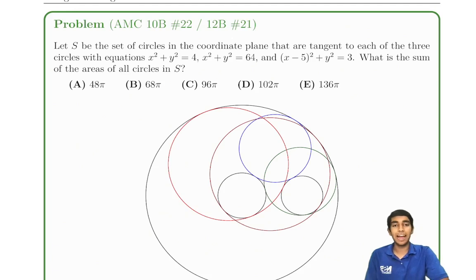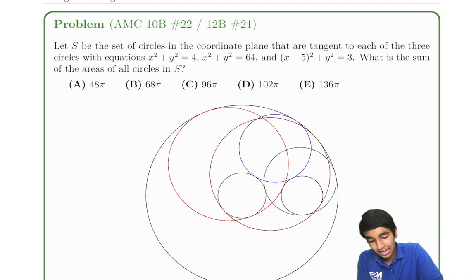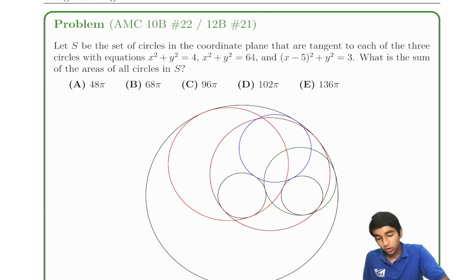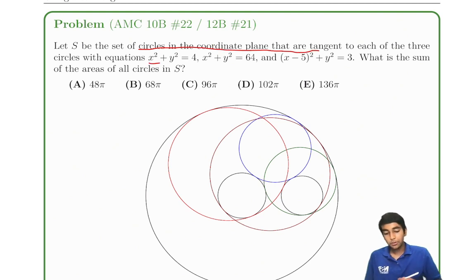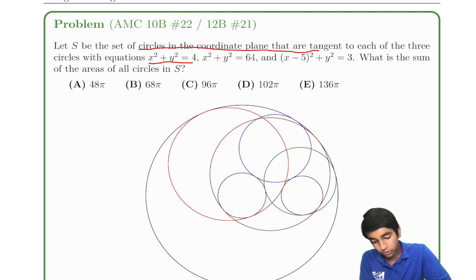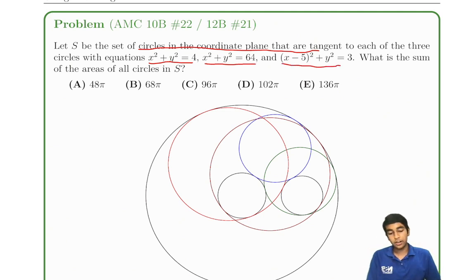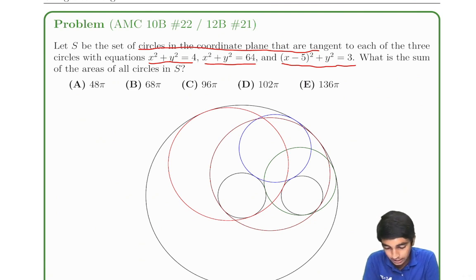Circles, circles, and more circles. In this problem from the AMC 10 and 12b, let S be the set of circles in the coordinate plane that are tangent to each of the three circles with equations x² + y² = 4, x² + y² = 64, and (x - 5)² + y² = 3. Find the sum of the areas of all circles in S.